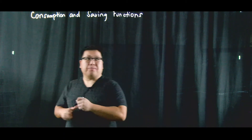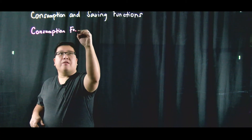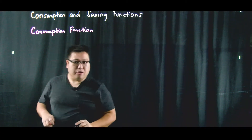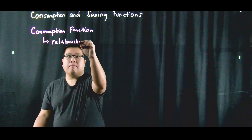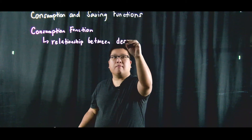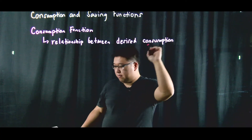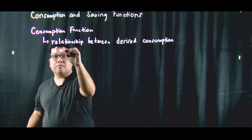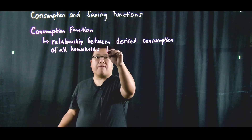Hi, my name is Dr. Michael Batu and today we're going to talk about consumption and saving functions. The consumption function gives us the relationship between disposable income and consumption — specifically, it's the relationship between desired consumption of all households and the several factors that determine it.